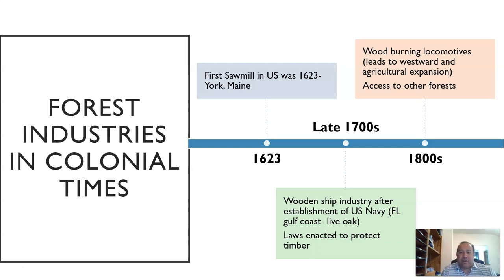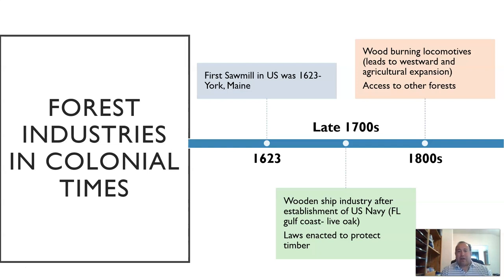In the 1800s, you got both wood-burning locomotives and westward and agricultural expansion. There was now access to the West and other forests, and you needed wood to help create the tracks and burn the engines, so forests continued to be extremely important during these colonial times.